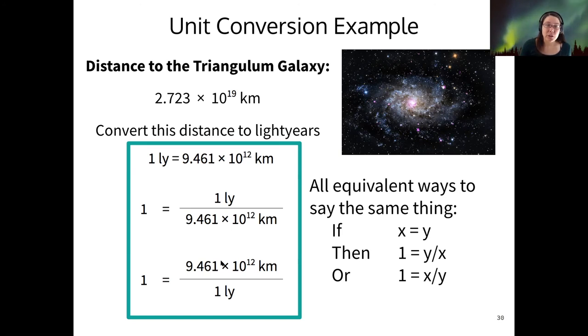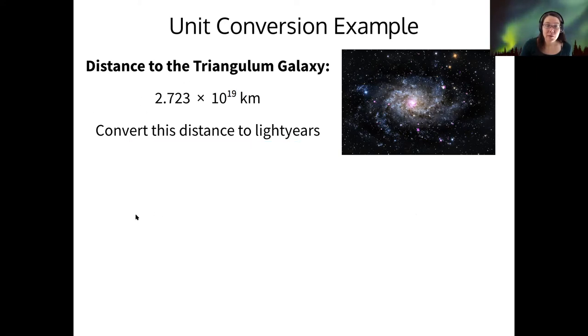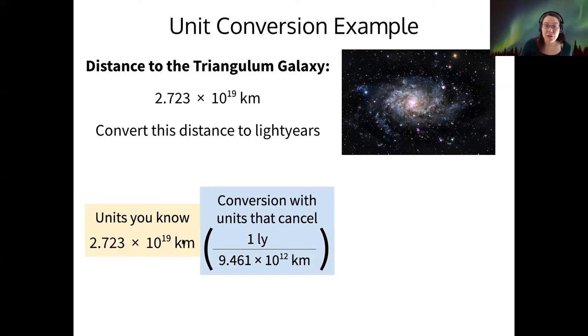And the way I decide which one to choose is by looking at what I'm starting with. So if I'm starting with a number in kilometers, then I start with the units I know. And I just try to choose a fraction that makes sure that that unit I know is canceled out and replaced by the one I want. So that's what I've done here. And so if I cancel that unit of kilometer and then continue to finish the math in scientific notation, then I'll have my distance in light years.